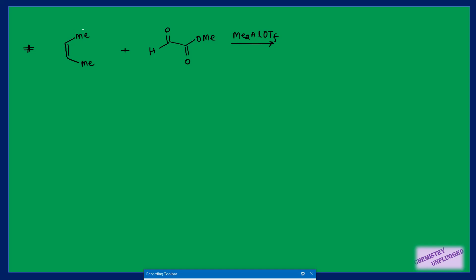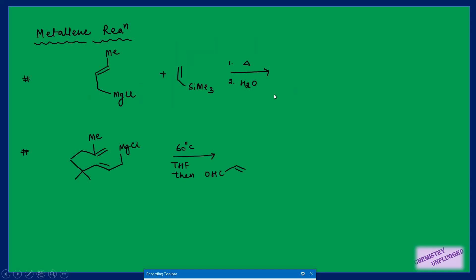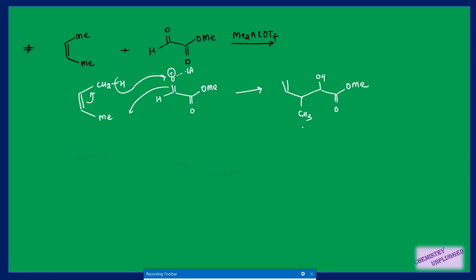In the next example, the ene is connected with two allylic carbons, so either can participate. The enophile is activated after Lewis acid attachment. The proton transfers to the oxygen, the bond shifts to form a new sigma bond, and this shifts to form a new pi bond. The question is: what will be the attachment side of the methyl and OH — syn or anti? This reaction involves a six-membered transition state.